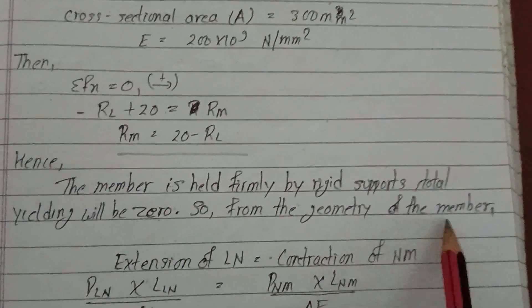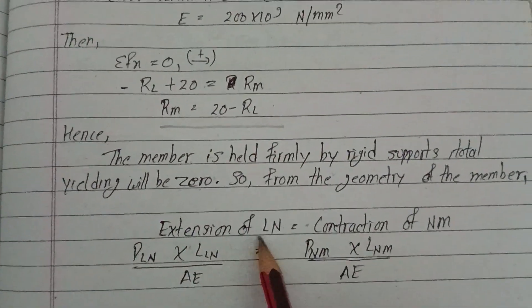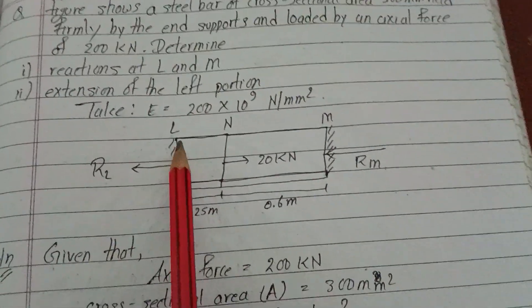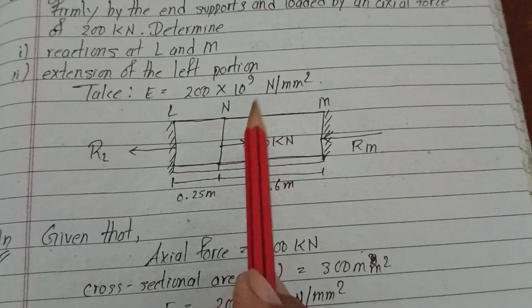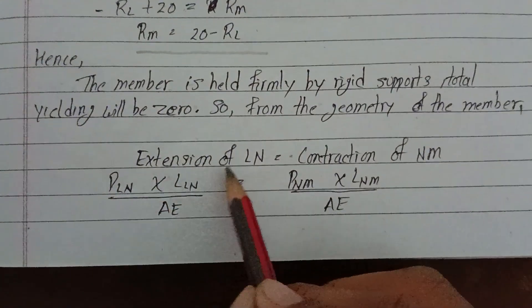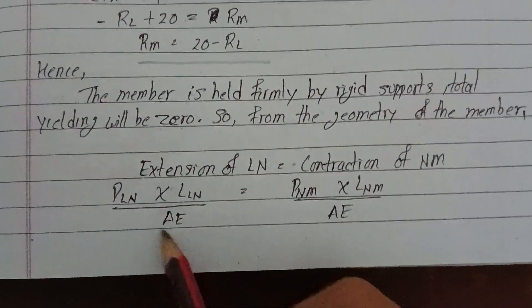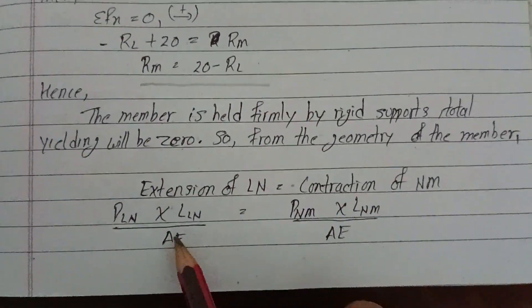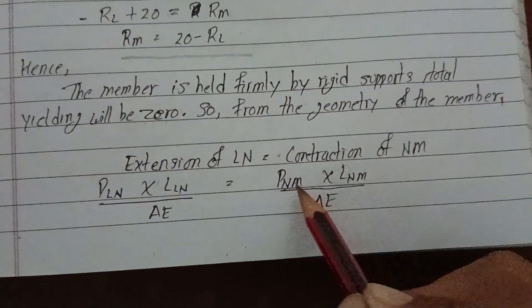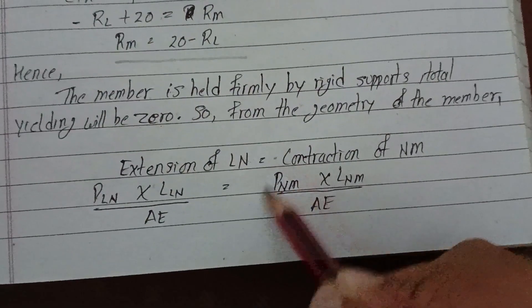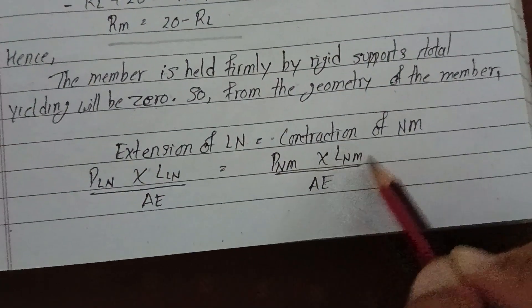From the geometry of the member, extension of LN equals contraction of MN. The extension of LN equals contraction in MN. The extension of LN when equal to load times length divided by area times Young's modulus of elasticity. The contraction equals load on LM times length of LM divided by A times E.